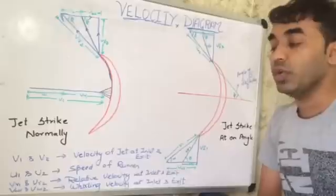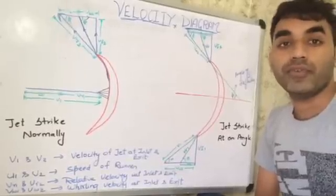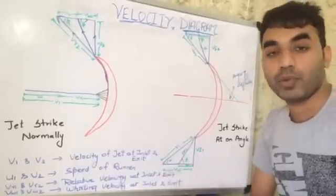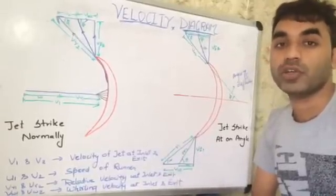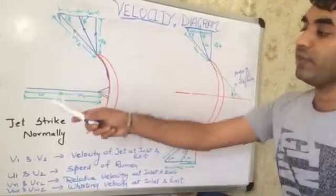We have Vw1 and Vw1. These are the components of V1. And similarly, the second component of V1 is your Vm. This is your velocity of flow. Now, we have here two conditions.